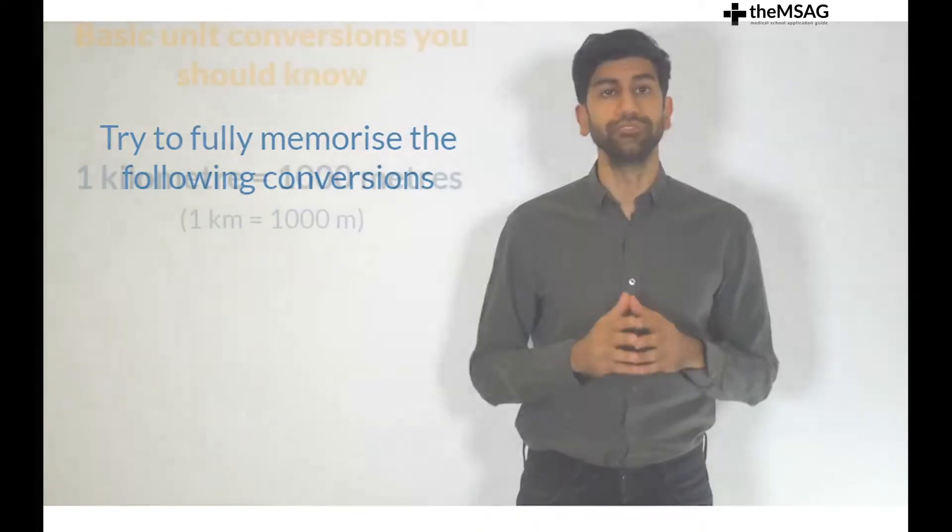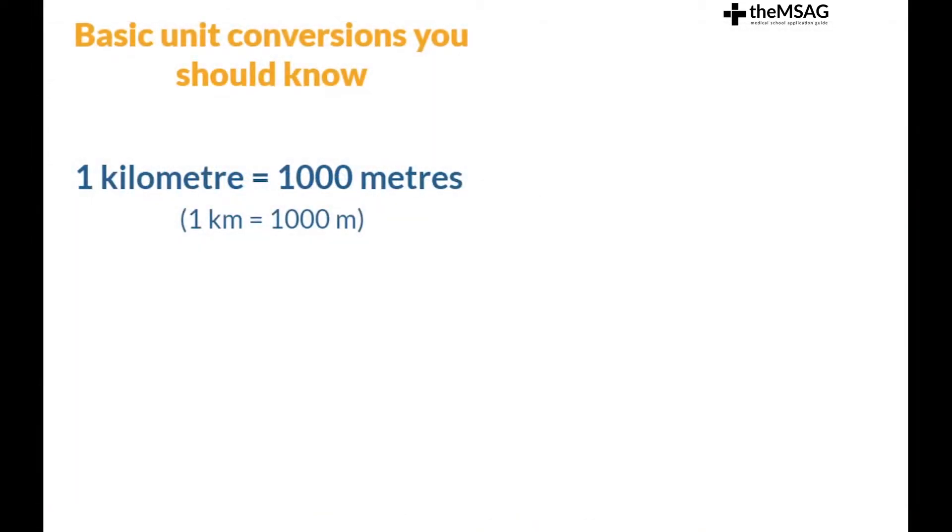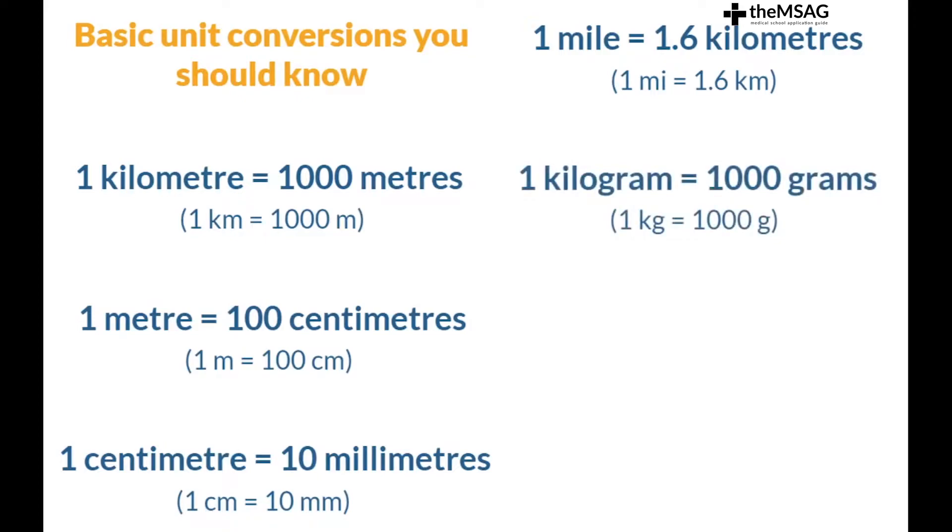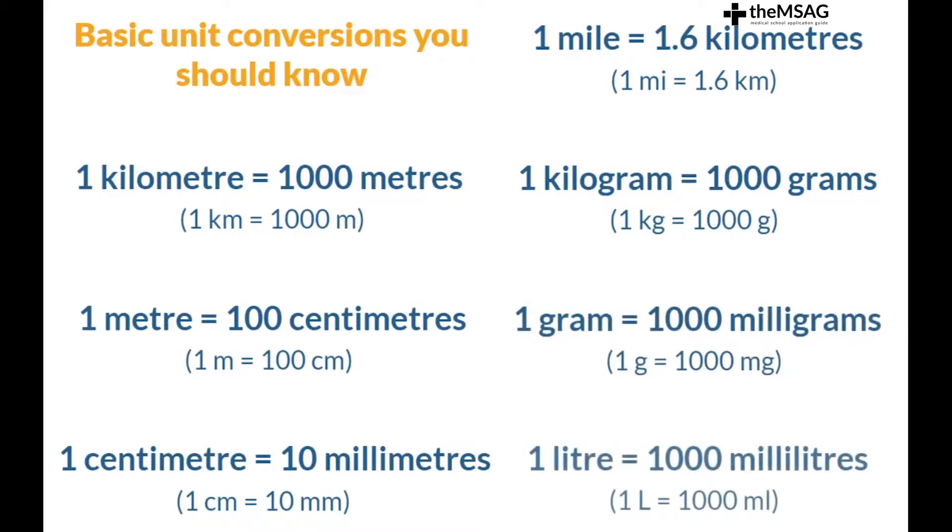So without further ado: one kilometer equals 1000 meters, one meter equals 100 centimeters, one centimeter equals 10 millimeters, one mile equals 1.6 kilometers, one kilogram equals 1000 grams, one gram equals 1000 milligrams, one liter equals 1000 milliliters.